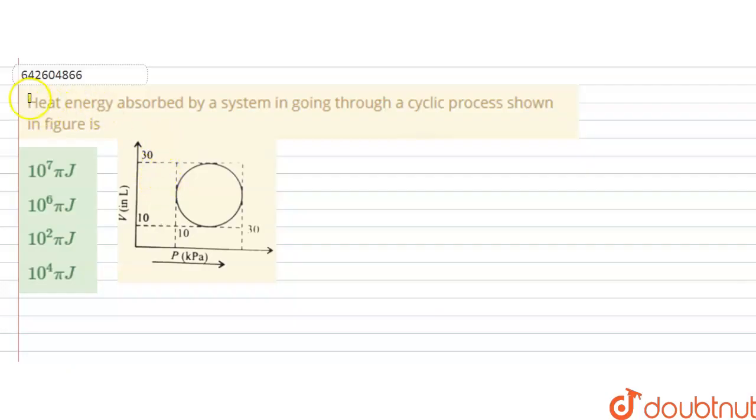Hello students, the question is, heat energy absorbed by a system in going through a cyclic process shown in the figure is. So in this question, we have to find out the heat energy that is absorbed by a system in this cyclic process given by this figure.